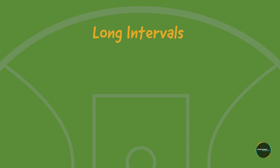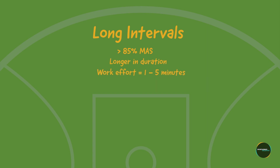One final use of MAS for conditioning is long intervals. Long intervals typically involve running at a speed greater than 85% of an athlete's MAS, performed for a longer period of time — typically one to five minutes — and repeated three to six times. Rest periods between efforts generally range from one to two minutes.